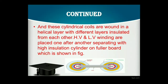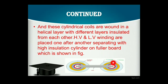Now you can see the top view of the winding of the core type transformer. This is the HV winding, this is the LV winding, and between these two is the insulation. This type of cylindrical coils are wound in a helical layer with different layers insulated from each other by high voltage insulation. HV and LV winding are placed one after another, separated by a high insulation cylinder on fuller board, as shown in the figure. This core is made by silicon steel, that is a ferromagnetic material.